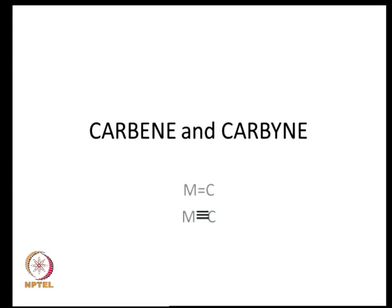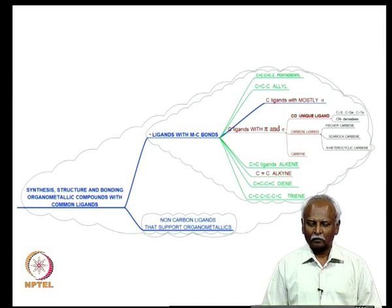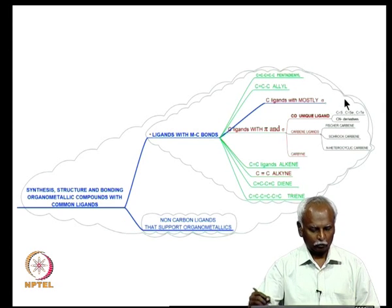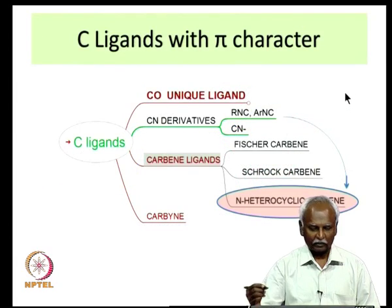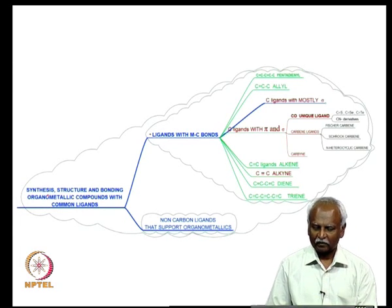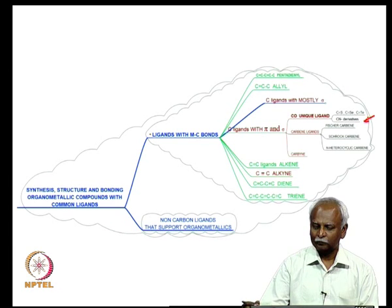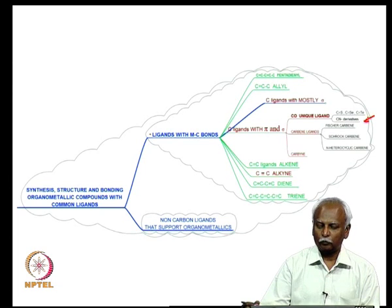In this lecture, we will discuss complexes which have multiple bonds between metal and carbon. We have already seen carbon monoxide and a few other ligands, shown in this ligand map. Carbon monoxide occupies a unique place in the ligand space. There are some derivatives of carbon monoxide such as the cyanide, which have a special ability to transform in the coordination sphere of the metal to some other ligands.